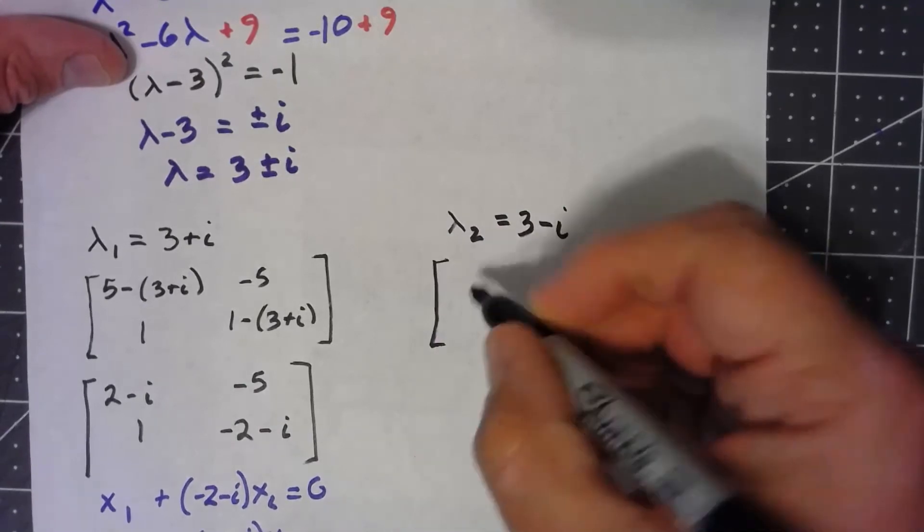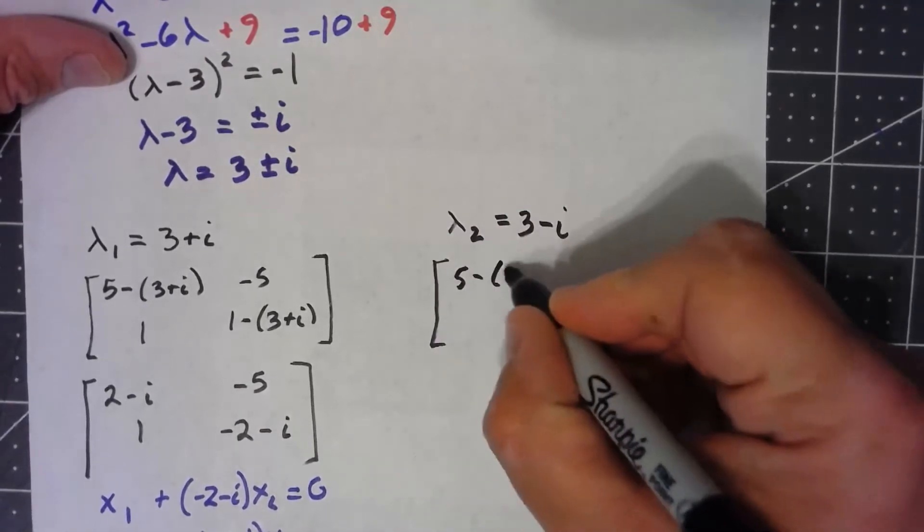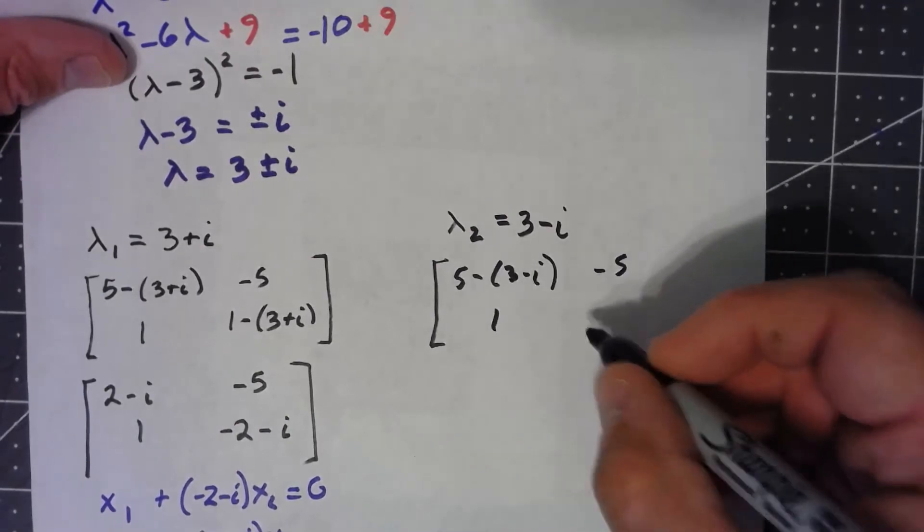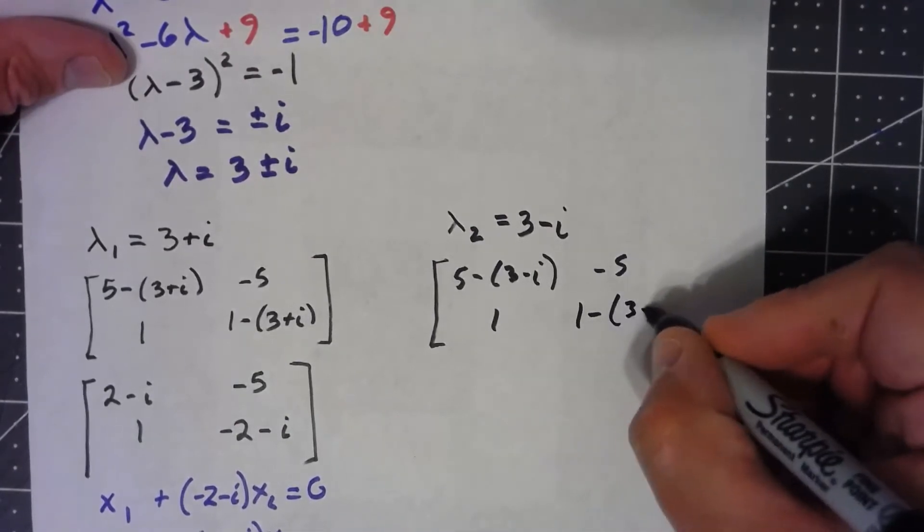Same kind of thing. I've got 5 minus 3 minus i, negative 5, 1, 1 minus 3 minus i.